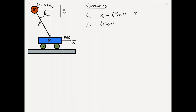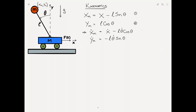In order to find the velocity in each of these directions, I take the time derivative of X sub m and Y sub m respectively. This gives X dot m, the velocity in the X direction, equal to X dot minus L theta dot cosine of theta. Note that we're taking the derivative with respect to time and not with respect to theta, which is why we get theta dot. And Y dot m is equal to negative L theta dot times sine of theta. We'll call these equations 3 and 4.